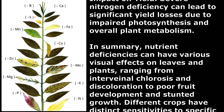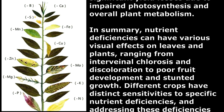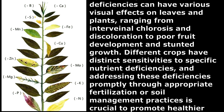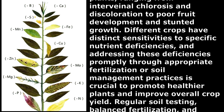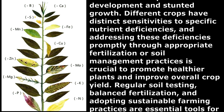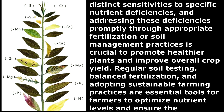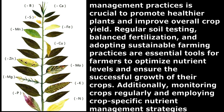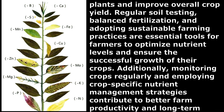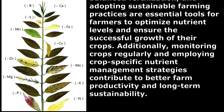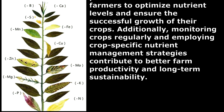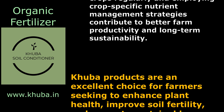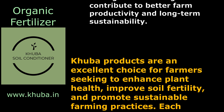In summary, nutrient deficiencies can have various visual effects on leaves and plants, ranging from interveinal chlorosis and discoloration to poor fruit development and stunted growth. Different crops have distinct sensitivities to specific nutrient deficiencies, and addressing these deficiencies promptly through appropriate fertilization or soil management practices is crucial. Regular soil testing, balanced fertilization, and adopting sustainable farming practices are essential tools for farmers to optimize nutrient levels. Monitoring crops regularly and employing crop-specific nutrient management strategies contribute to better farm productivity and long-term sustainability.